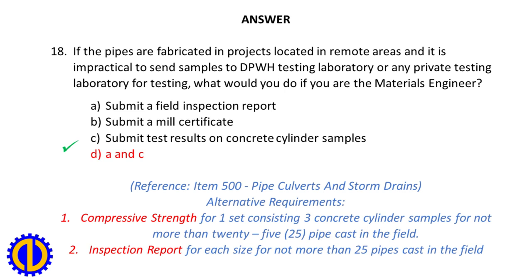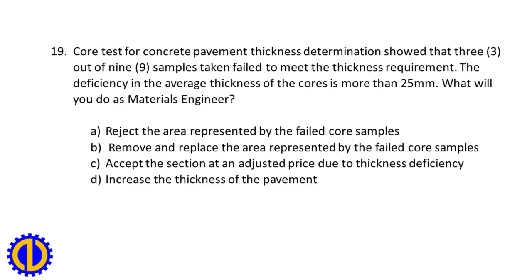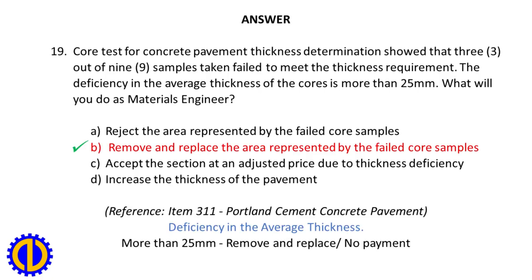Inspection report for each size for not more than 25 pipes cast in the field. Question 19. Core test for concrete pavement thickness determination showed that three out of nine samples taken failed to meet the thickness requirement. The deficiency in the average thickness of the cores is more than 25 millimeters. What will you do as materials engineer? A. Reject the area represented by the failed core samples. B. Remove and replace the area represented by the failed core samples. C. Accept the section at an adjusted price due to thickness deficiency. D. Increase the thickness of the pavement. Answer: B. Remove and replace the area represented by the failed core samples. Reference: Item 311, Portland Cement Concrete Pavement, Deficiency in the average thickness — more than 25 millimeters: remove and replace.